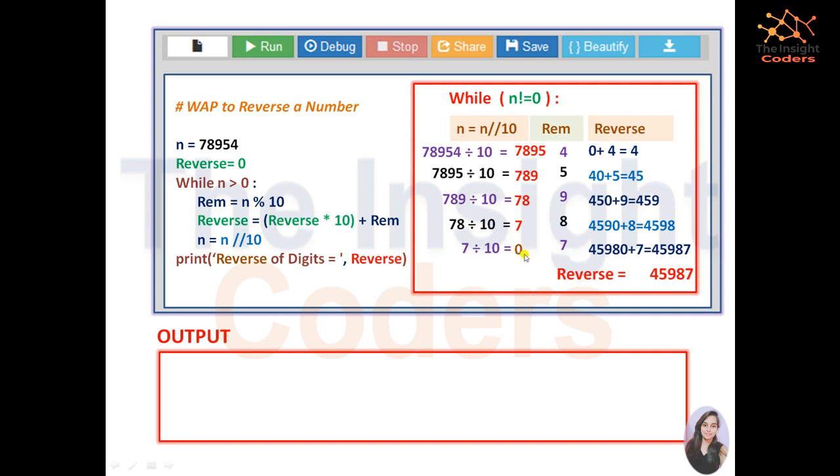Since we have to add the number to reverse, we use additive property and initialize it by 0, because 0 plus anything is equals to that thing. A loop until unless we get n equals to 0. We have checked it many times in our previous videos. Finally calculated the remainder divided n by 10.